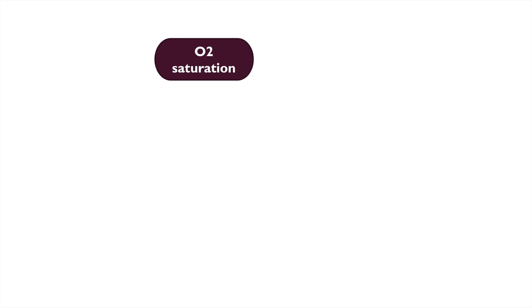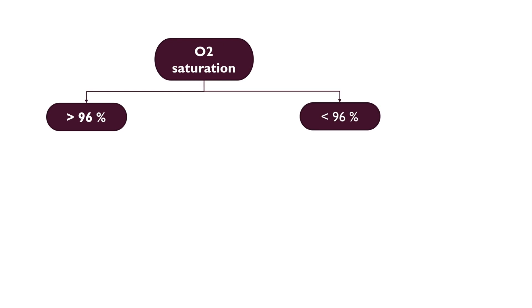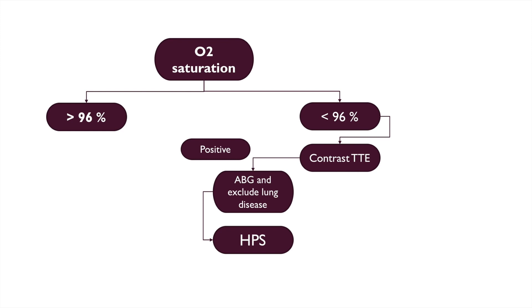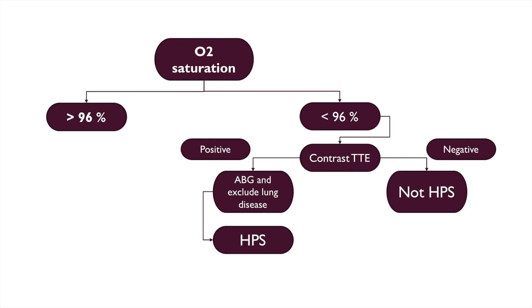This flowchart represents a means to diagnose hepatopulmonary syndrome based on oxygen saturation. If oxygen saturation is more than 96%, it is unlikely the patient has hepatopulmonary syndrome. If saturation is less than 96%, the patient can undergo a contrast transthoracic echocardiogram, the contrast being agitated air bubbles. If the test is positive and lung disease is excluded with arterial blood gases performed, a diagnosis of hepatopulmonary syndrome is established. If the test is negative, the patient does not have hepatopulmonary syndrome.